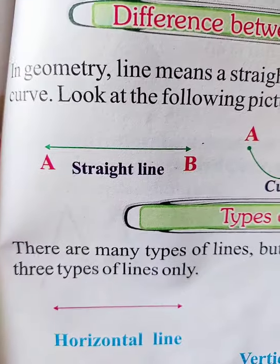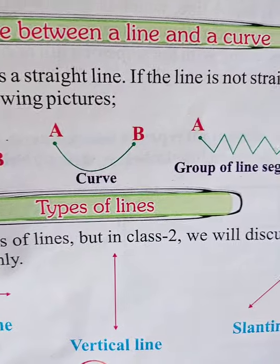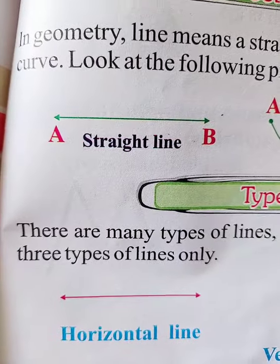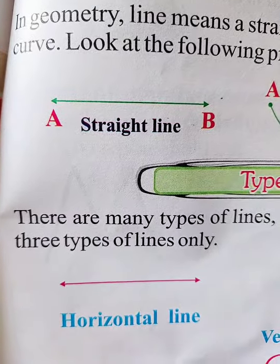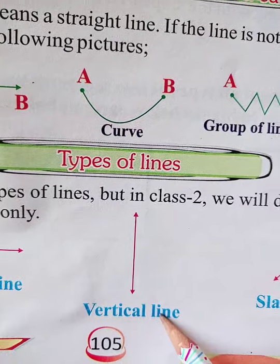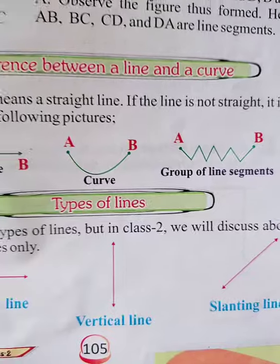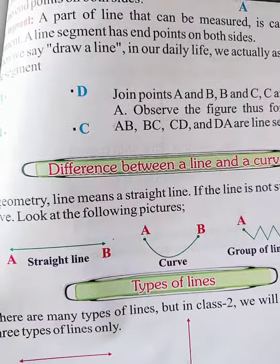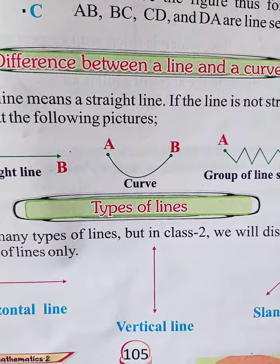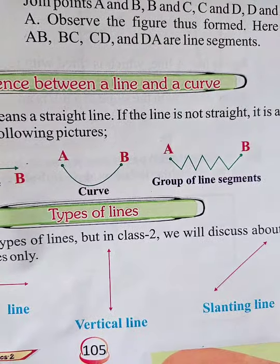Here, types of lines. There are many types of lines, but in class 2 we will discuss about 3 types of lines only: horizontal line, vertical line, and slanting line.